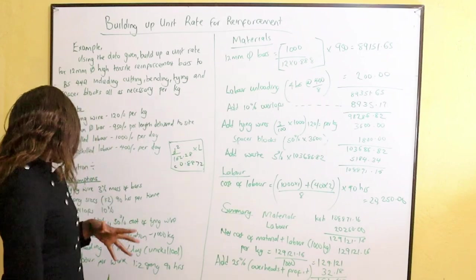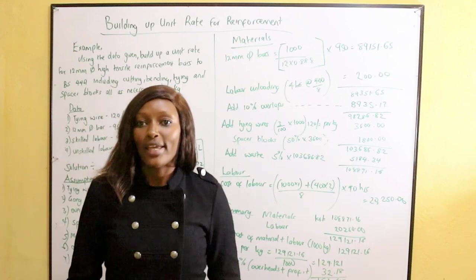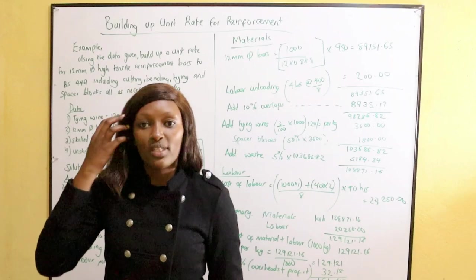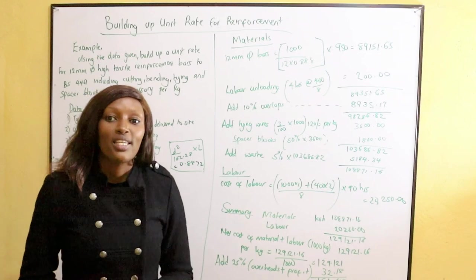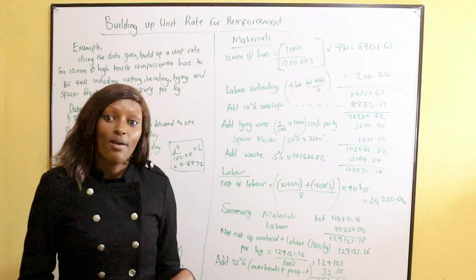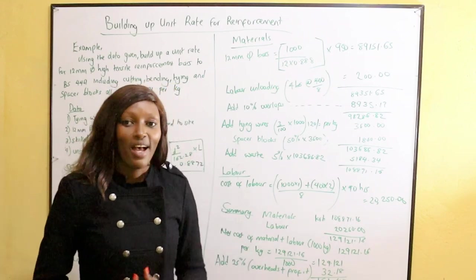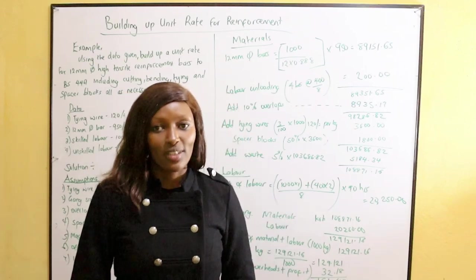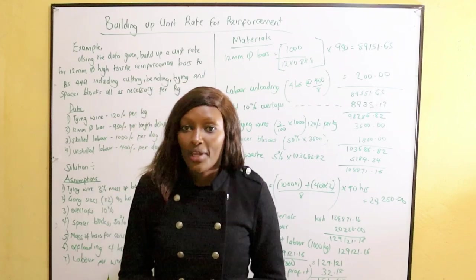When we are doing unit rates, we consider all the materials that we shall use, then the labor that shall be applied, and we cost for those. Then the total cost for materials, total cost for labor, and any plant and equipment — we add all of that, then do overheads and profits, and by that we get the unit rate.